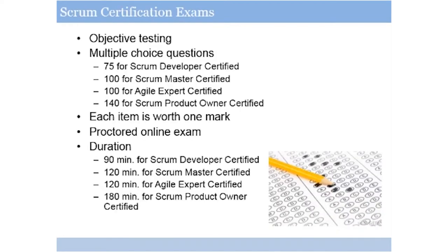There are a number of different Scrum certification exams available. The Scrum certification exams are objective tests that test your ability to utilize and adopt the Scrum practices. The Scrum examinations are multiple choice examinations, and there are differing numbers of questions for the different tests — from 75 for the Scrum Developer Certified exam up through 140 questions for the Scrum Product Owner Certified exam. On each of the examinations, each question is worth one mark, and there's no guessing penalty, so take your best guess on every single question. Your exam will be proctored online, and the duration differs depending upon which exam you're taking — from 90 minutes for Scrum Developer Certified to 120 minutes for Scrum Master or Agile Expert, up through 180 minutes for the Scrum Product Owner Certified exam.